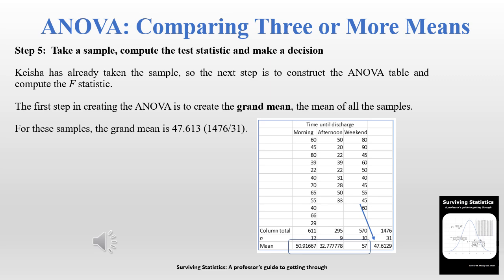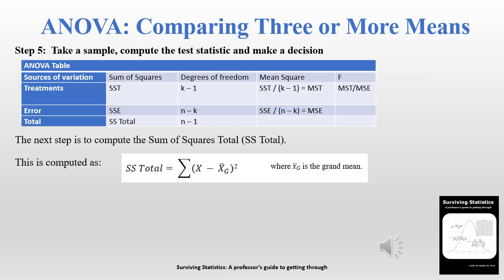We'll construct the ANOVA table manually. The first step is to compute the grand mean, which is the mean of all the sample means. We have the mean of each sample — morning, afternoon, and weekend — and we take the mean of those means, which we call the grand mean, arriving at 47.613. The grand mean doesn't appear on the ANOVA table as a standalone but is essential for computing the SS total. The formula is summing up (X minus the grand mean) squared for each value.